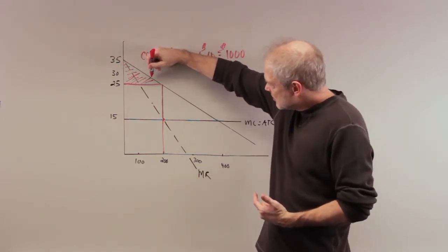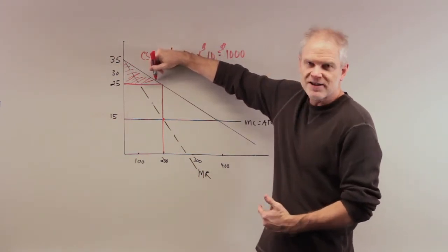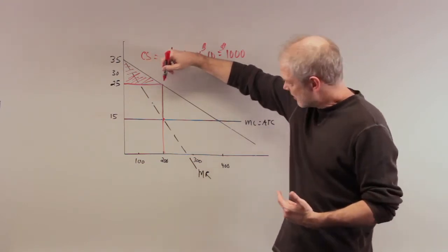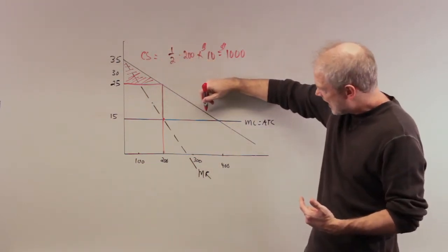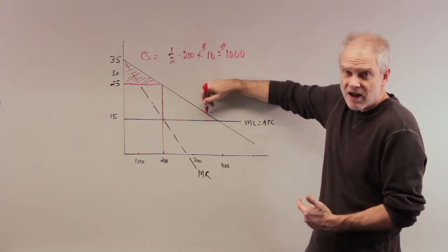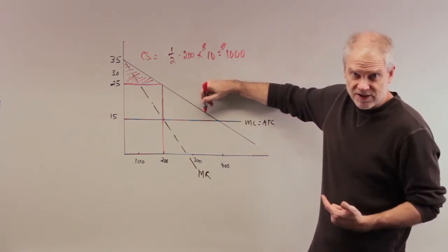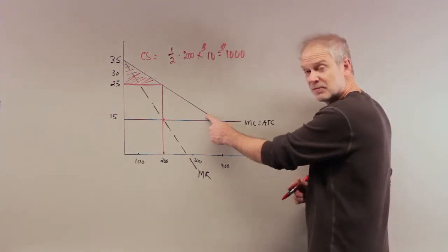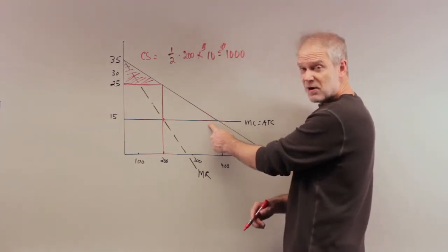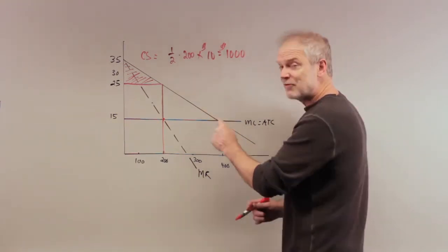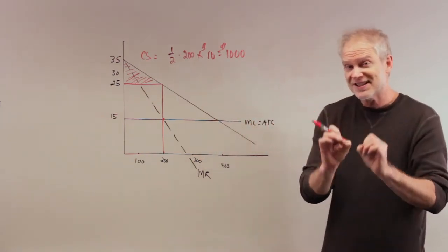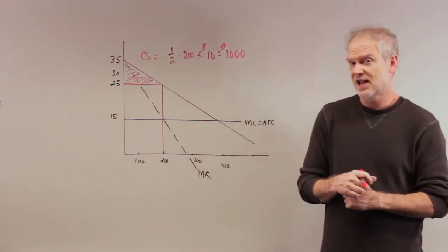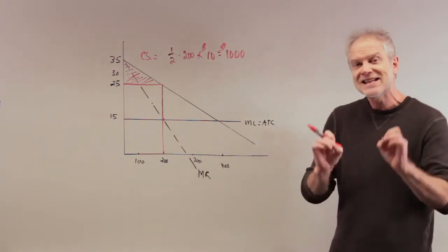This person who is willing to pay 34 dollars, the monopolist charges them 34 dollars. This person willing to pay 26 dollars gets charged 26 dollars. Every time the monopolist charges a price and the price exceeds marginal cost, the marginal revenue of that sale equals the price. The consumer surplus is zero. The monopolist gets it all.